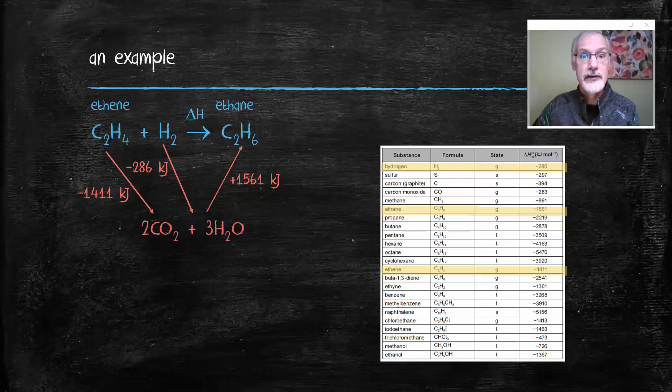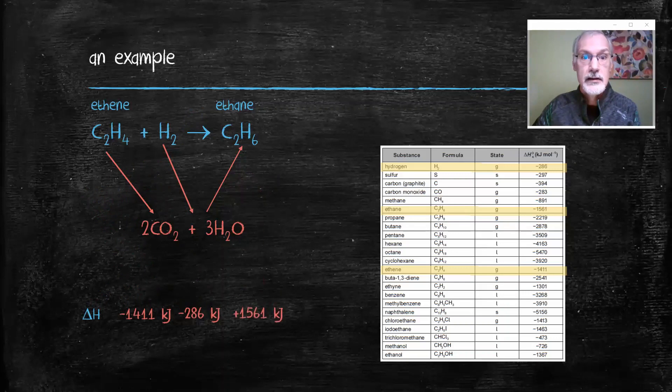So according then to Mr. Hess's law, if I want to figure out the heat for this reaction I just have to add together the steps of my journey and I would get the heat for the reaction.